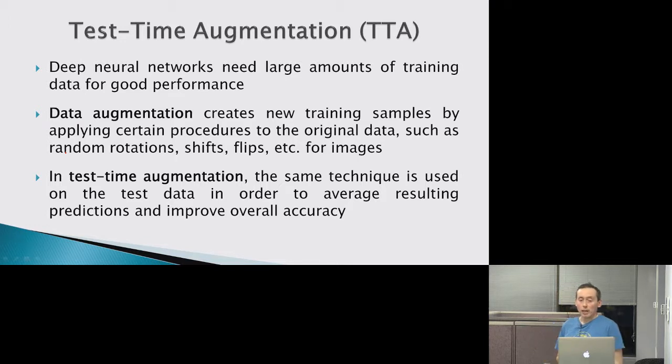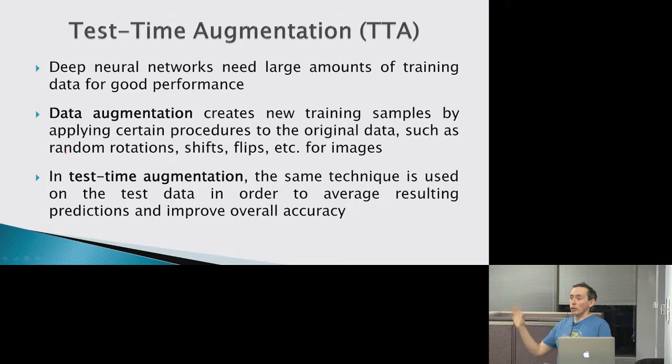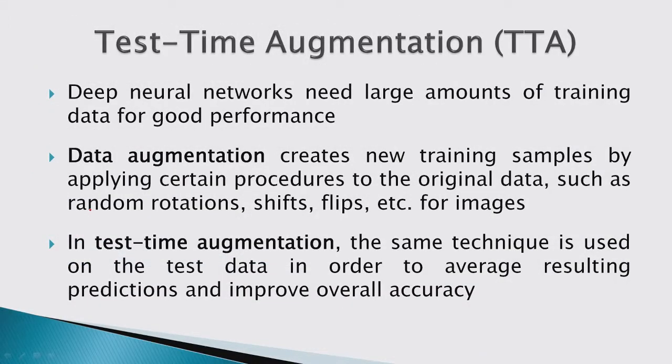The last technique is test time augmentation. Deep neural networks need large amounts of training data, and data augmentation creates new training samples by applying procedures like random rotation, shifts, and flips to the original data. For test time augmentation, you apply the same technique to the test data, predict on all those different shifted images, and then take an average of those results as your overall prediction. There's a good chance that if the model didn't recognize an image in one form, it will recognize it shifted or flipped.